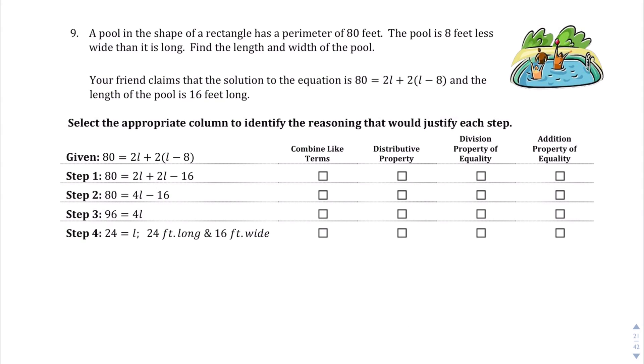Question 9. A pool in the shape of a rectangle has a perimeter of 80 feet. So if I can draw a pool here around this picture, the perimeter is 80. The pool is 8 feet less wide than it is long. So whatever the length is, it's 8 feet less wide, I think. I hope I'm writing the right equation here. Oh we are, writing it right here. Your friend claims that the solution to the equation is 80 equals 2L plus 2 times L minus 8, and the length of the pool is 16 feet long. Well let's go ahead and check. If I were to do this over again, or actually no, we're not looking for the right answer. We're just checking their equation here. So we have two sides, like the top and the bottom, 2L. And then we have the two side lengths. And all that equals 80.